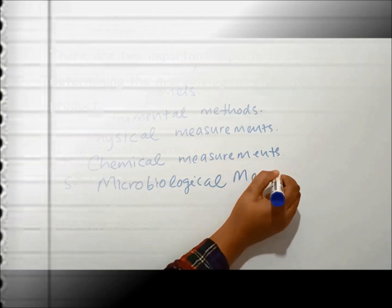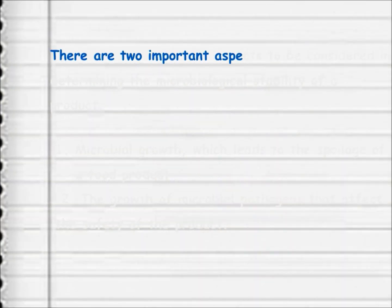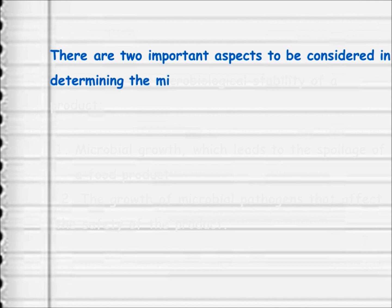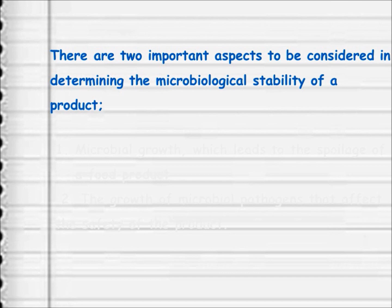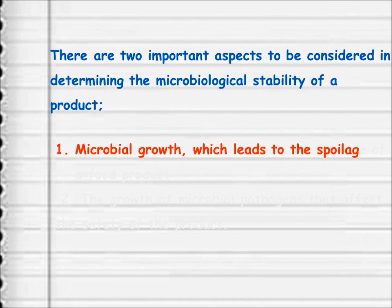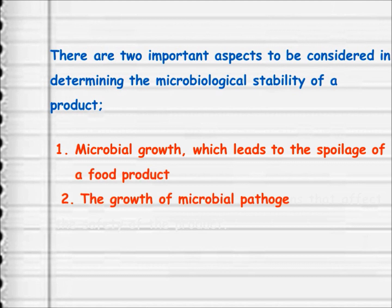Microbiological measurements involve two important aspects: first, microbial growth, which leads to the spoilage of a food product; and second, the growth of microbial pathogens that affect the safety of the product.